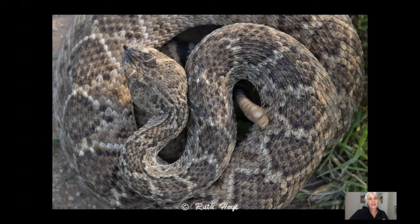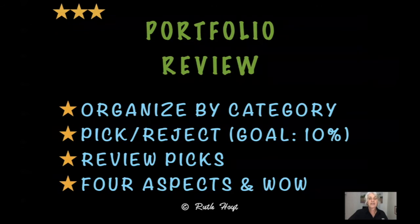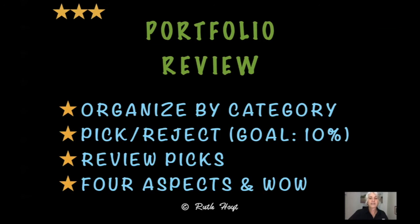You don't know what the photo editor or contest judge wants, so it depends on what they want as to how pictures will be picked. For the portfolio review, you want to organize your photos by category, pick and reject, and be pretty ruthless about it — I know my name is Ruth, I can be ruthless. The goal is to get rid of 90 percent — not throw away but cull — so what you're left with is 10 percent. If you have a thousand pictures you'll end up with a hundred. You review your pics thinking about the four aspects: focus, exposure, composition, content, and the wow factor.